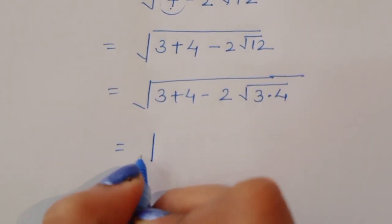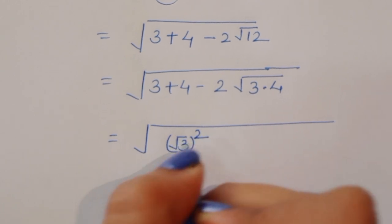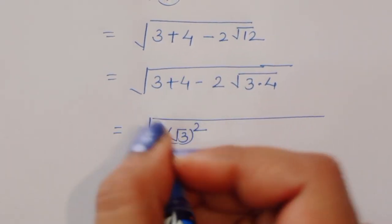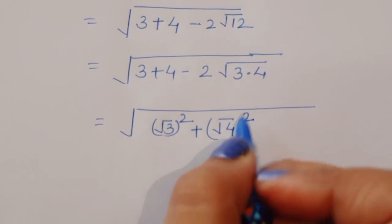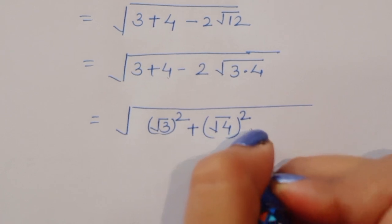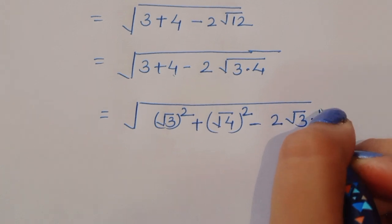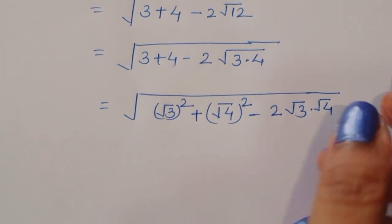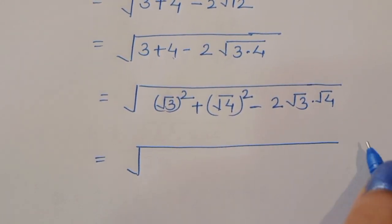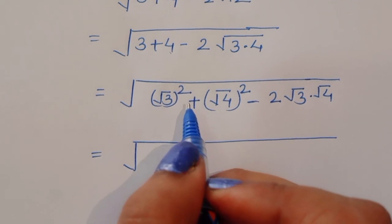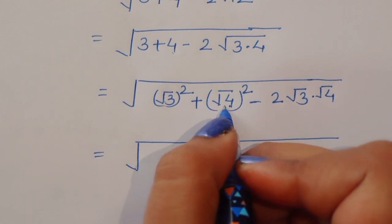We can write this under a square root. Now, this 3 — square root of 3 squared is 3, plus 4. Again, we can write 4 as a square root squared. So we have 4 minus 2 square root of 3 times square root of 4. We are separating terms here. Square root of 4 that is 2, so we can write it as 2 squared.